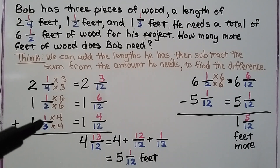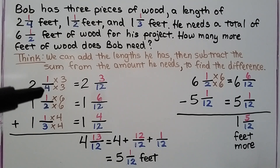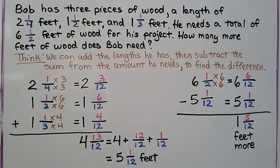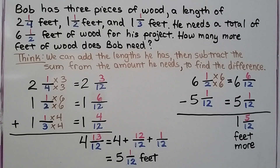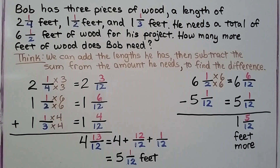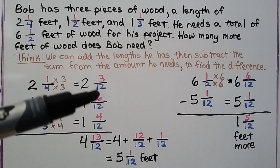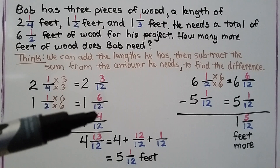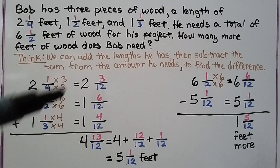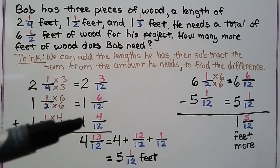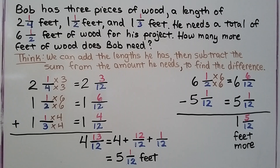He has 2 and 1 fourth, 1 and a half, and 1 and 1 third. We need to give them like denominators — they can all meet at 12. 4 times 3 is 12, so we multiply 1 times 3 to get 3 for the numerator. 2 times 6 is 12, so we multiply 1 times 6 to get 6. 3 times 4 is 12, so we multiply 1 times 4 to get 4. Now we add the numerators: 6 plus 4 is 10, plus 3 more is 13. We have 13 twelfths. We add the whole numbers: 2 plus 1 plus 1 is 4. We have 4 and 13 twelfths.